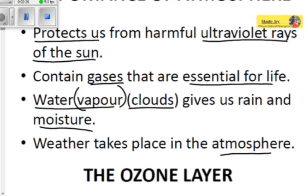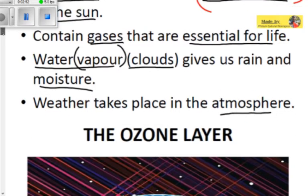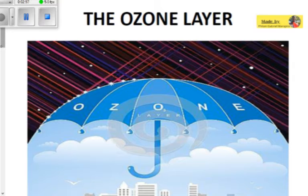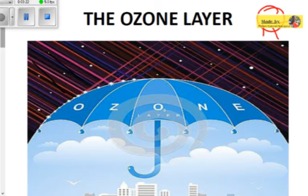The atmosphere protects us from harmful ultraviolet rays. How does it do that? We now move to the concept of the ozone layer. You can see a depiction of the ozone layer here — the pink and red lines represent the ozone layer protecting the earth from the sun's harmful rays. The sun is releasing rays, represented by dots, which are harmful to us here on earth.